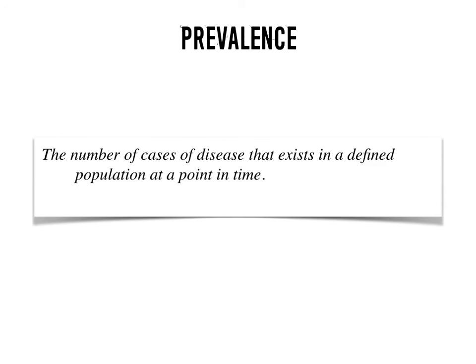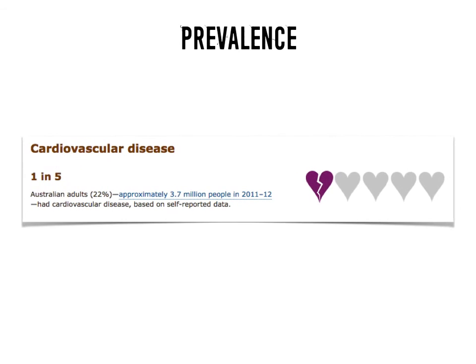Prevalence can be defined as the number of cases of disease that exist in a defined population at a point in time — the number of people that have a particular disease at any given time. For example, one in five Australian adults have cardiovascular disease, which is approximately 3.7 million people. That's an example of prevalence.